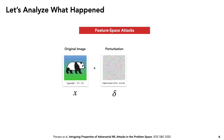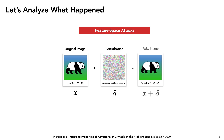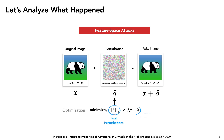Let's talk about what happened more formally. In traditional feature space attacks, you have an original image with feature vector x, you apply perturbation delta to that image, and obtain an adversarial image with feature vector x plus delta. To find this perturbation, you usually solve an optimization function by minimizing the sum of the pixel perturbation to keep the image realistic, and the loss of the target class so that the image is misclassified.